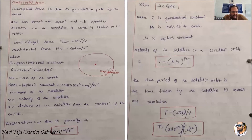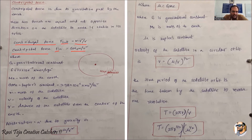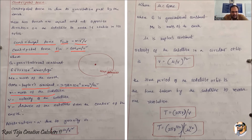The centrifugal force acting outward is expressed as F_effort = mv²/r. The centripetal force acting inward is given by F_in = GM_e × m / r², where G is the gravitational constant, M_e is the mass of the earth, and GM_e is Kepler's constant. The small m is the mass of the satellite, v is the velocity of the satellite, and r is the distance of the satellite from the center of the earth.